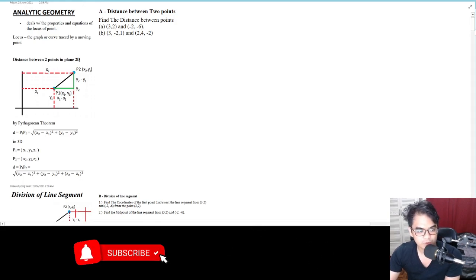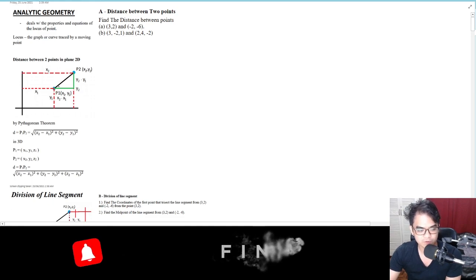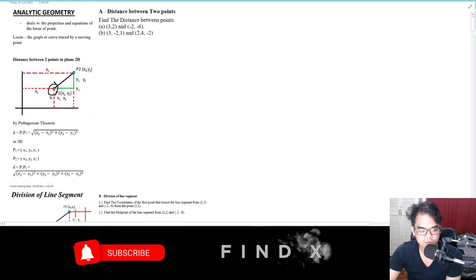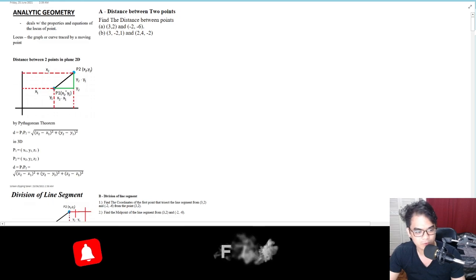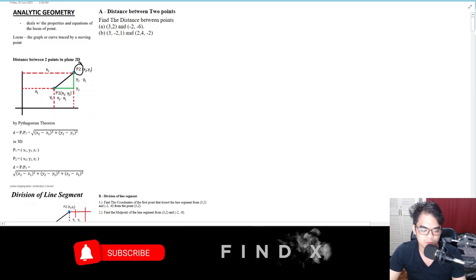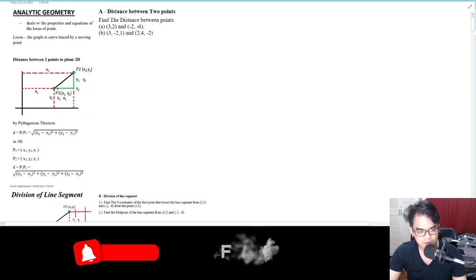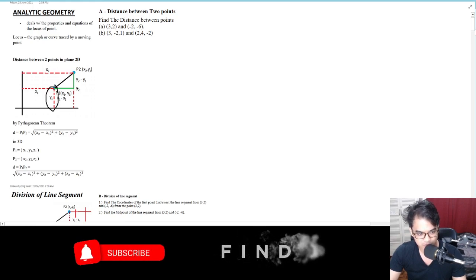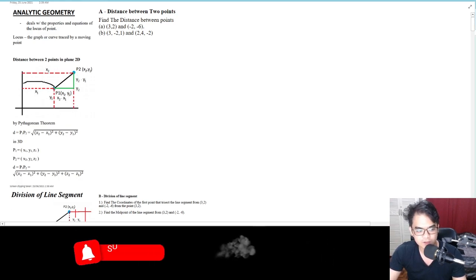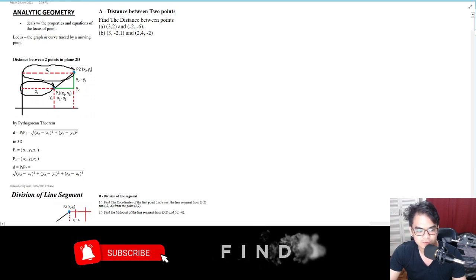We have distance between two points in a plane. As you can see, this is the first point and this is the second point, so we have P1 and P2. Let's say P1 has coordinates (x1, y1) and P2 has point (x2, y2). Using the Cartesian plane, this will be your y1 and this will be your y2. This is x1 and this is x2.